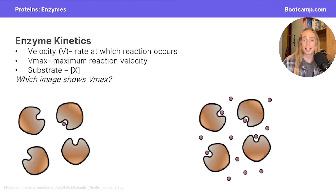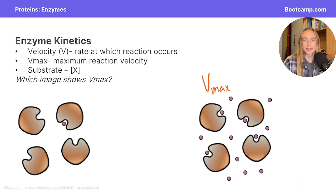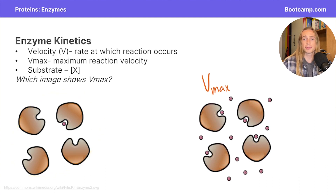After looking at the enzyme kinetics plot, can you tell which image shows Vmax, or the point where the enzymes are working as fast as possible? The image on the right shows Vmax. At Vmax, our enzyme is saturated with substrates, so adding more substrates isn't going to help the reaction go any faster. The image on the left has very few substrates and could easily be sped up by adding more, while the reaction on the right won't be benefited by adding more substrates.